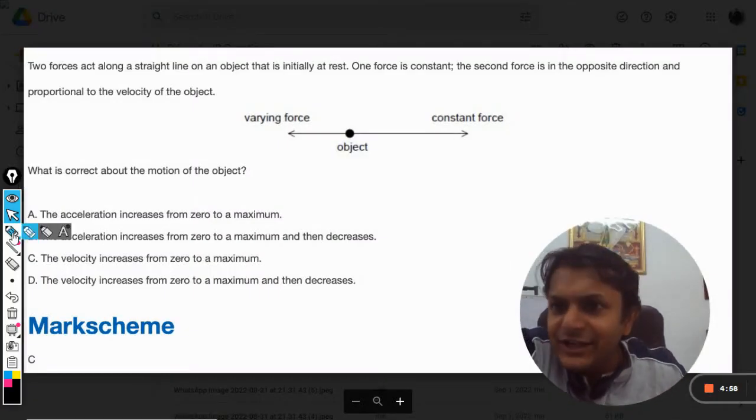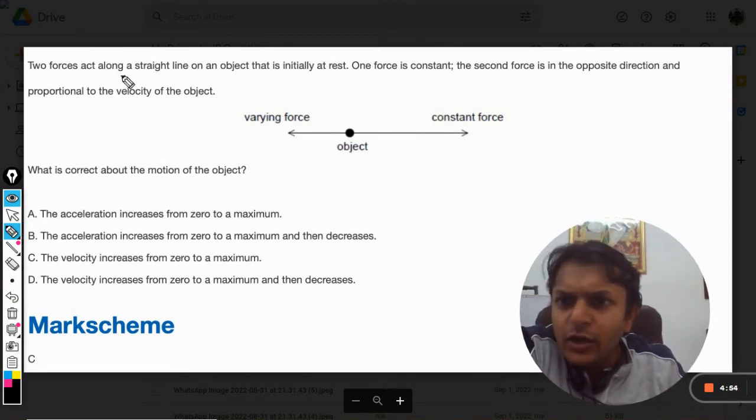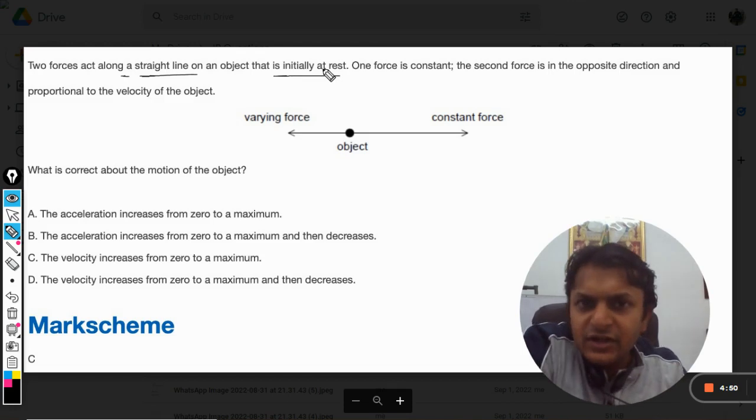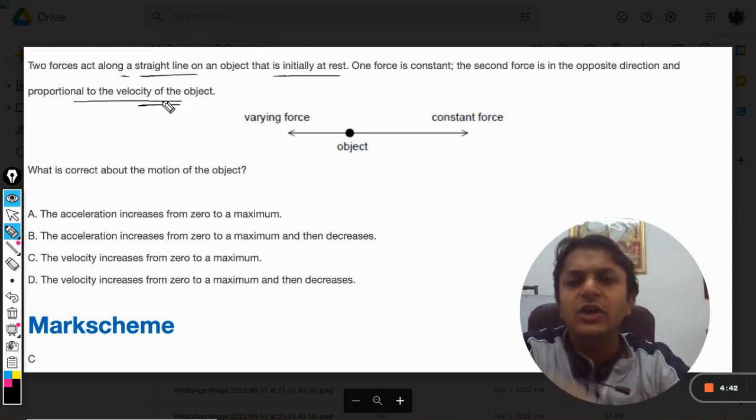Okay, dear students, let us see what is there in this question. Two forces act along a straight line on an object that is initially at rest. One force is constant and the second one is in the opposite direction and proportional to the velocity of the object.